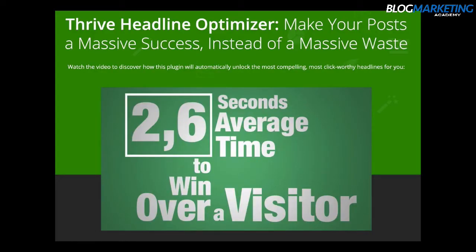Next is Headline Optimizer. It allows you to split test blog post headlines. Headline Optimizer rotates different versions of a headline and tracks which ones are actually getting more traffic, more click-throughs, and higher engagement. A lot of top content marketing companies, especially those relying on Facebook traffic, split test headlines — that's how they get those really engaging viral headlines. We can implement that same strategy right inside WordPress using Thrive Headline Optimizer.